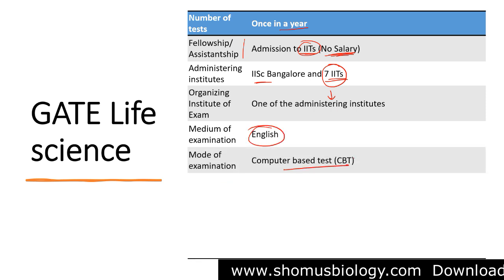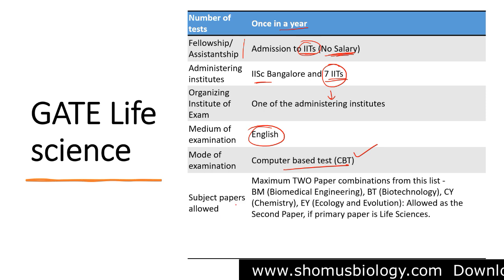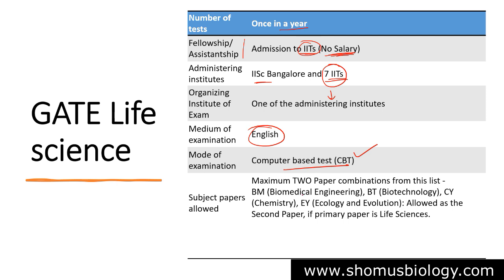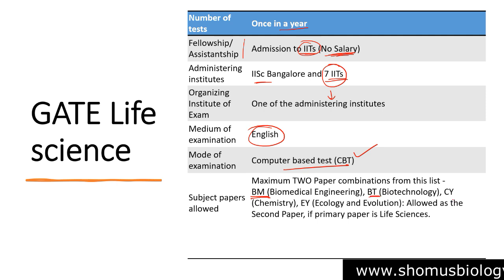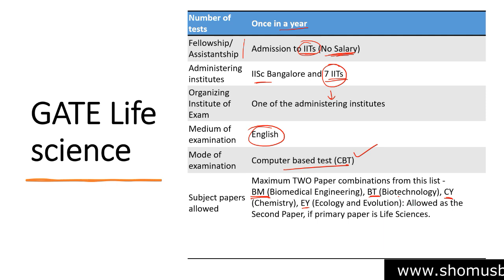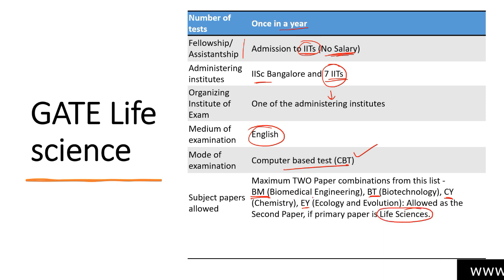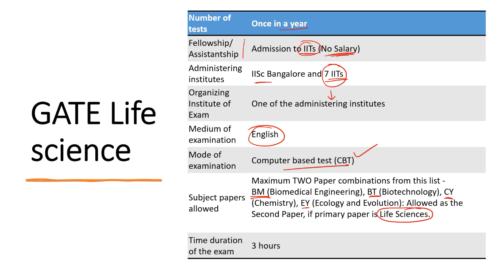The medium of exam is English. The exam mode is computer based test, or CBT. A maximum of two paper combinations are allowed from the list. If the primary paper is life science, you can take either biomedical engineering, biotechnology, chemistry, or ecology and evolution as your second paper. The duration of the exam is three hours.